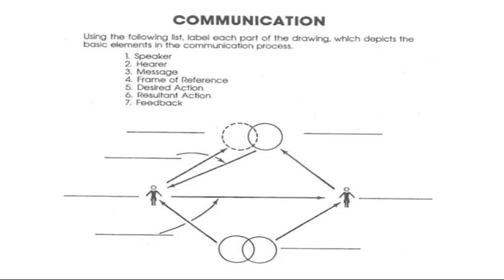There are seven phrases or words: speaker, hearer, message, frame of reference, desired action, result in action, and feedback. On your sheet of paper there are also seven spaces — four on your left-hand side and three spaces on your right-hand side.